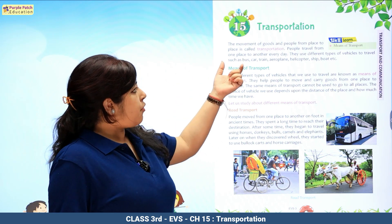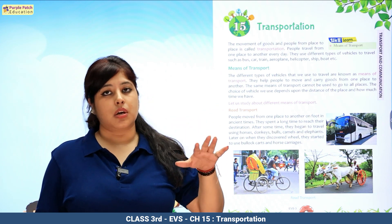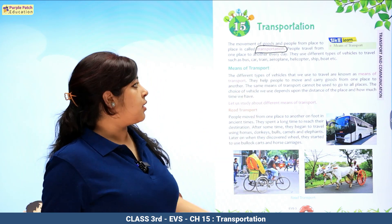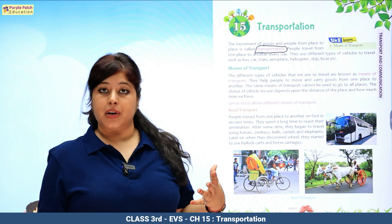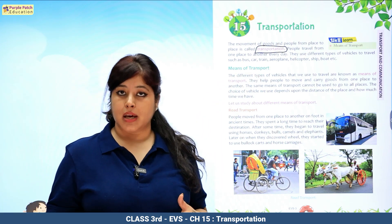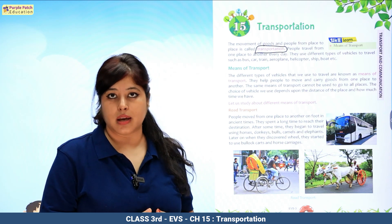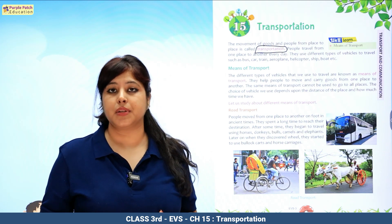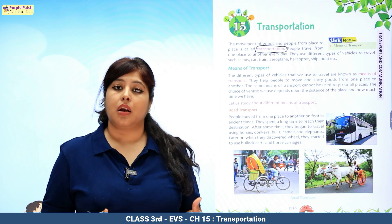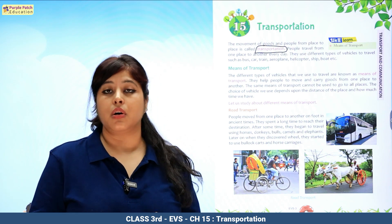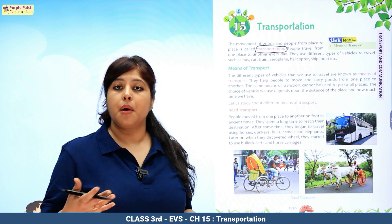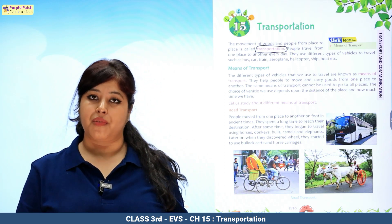The movement of goods and people from place to place — eek jaga se dousri jaga — is called transportation. People travel from one place to another every day. They use different types of vehicles. Some family members use public transport, some use private transport — their own personal vehicle. Like your father goes to office in car, maybe bike, scooter. Like in auto, some go in metros also. Working mothers may go by cab, taxi, bus, or drive their own car. This way they can commute from one place to another.